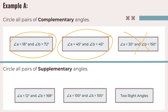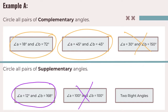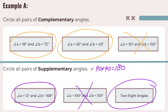Now for supplementary angles, we're looking for pairs that add up to 180. 12 plus 168 is 180, so they're supplementary. 100 plus 100 is 200, so that doesn't work — they don't add up to 180. Two right angles: 90 plus 90 gives me 180, so they are supplementary. I'll circle that one as well.